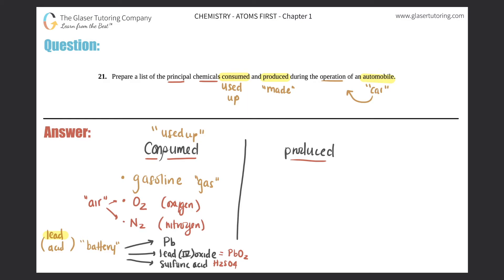Now, once the car is running, what's being produced? When gasoline is used, a specific type of reaction occurs called combustion. The products of a combustion reaction are always water (H2O) and carbon dioxide (CO2). So both water and carbon dioxide are produced.